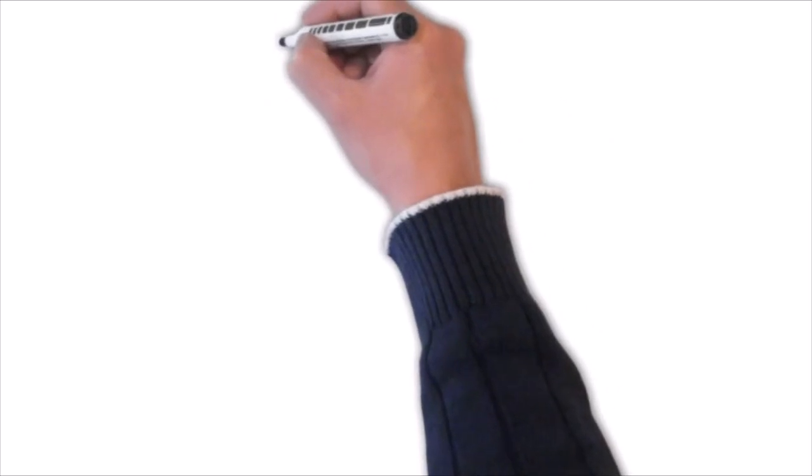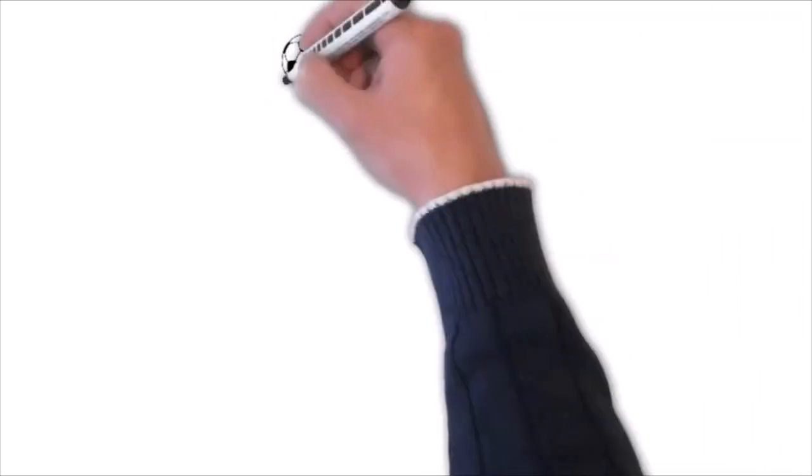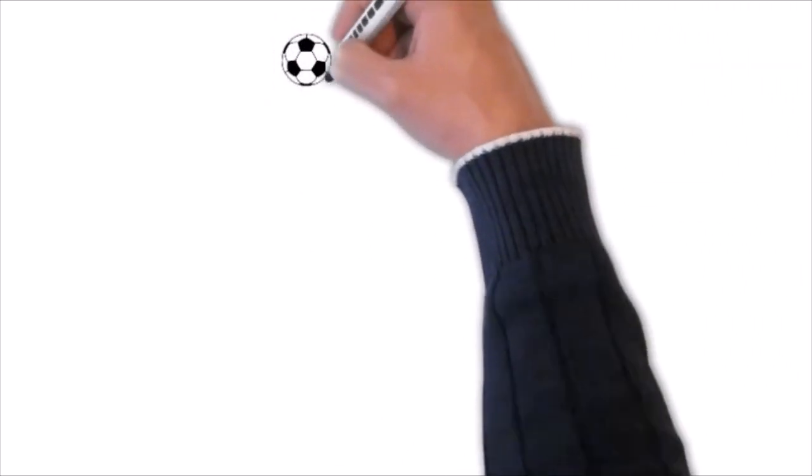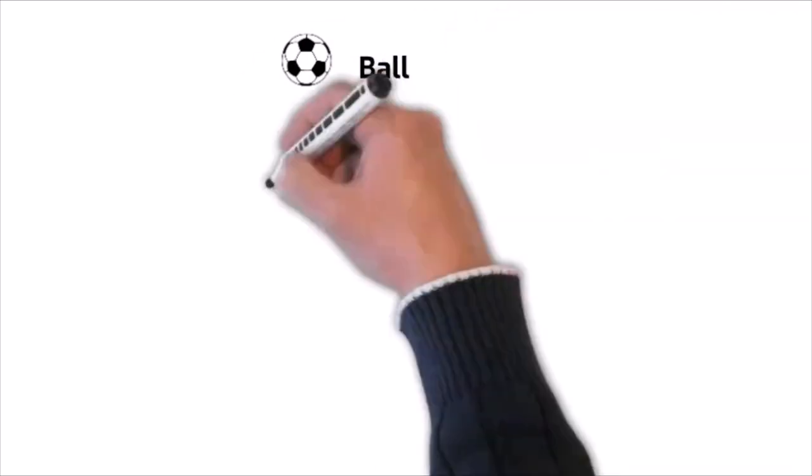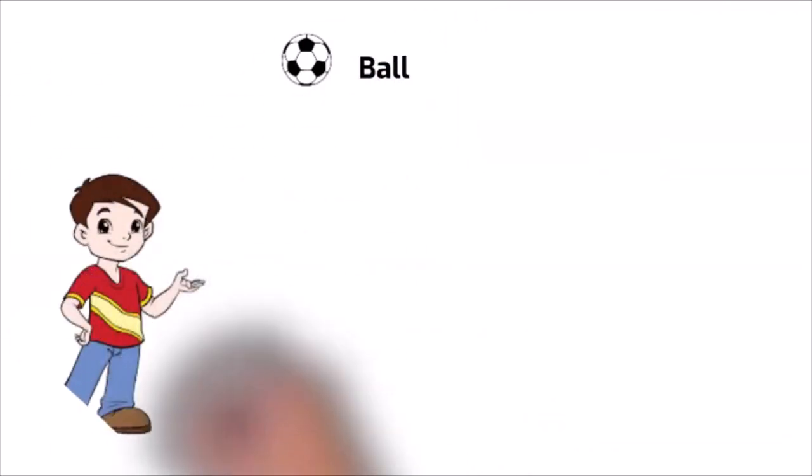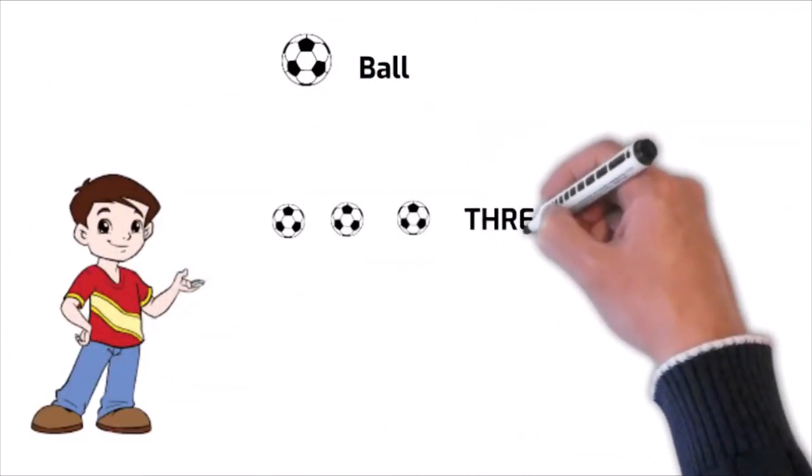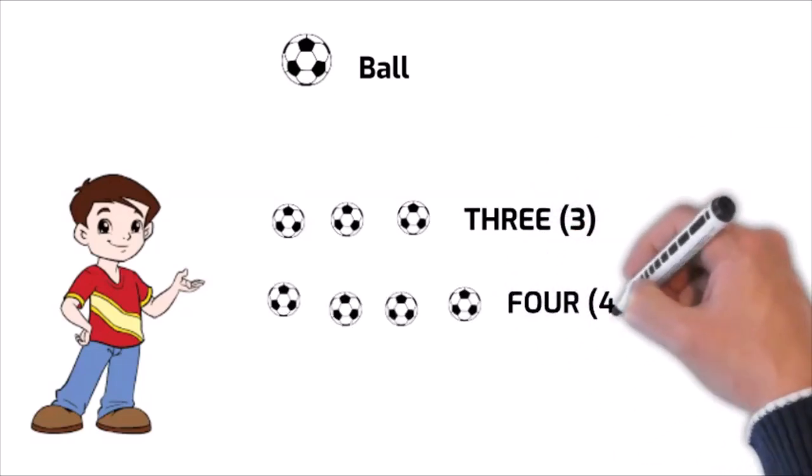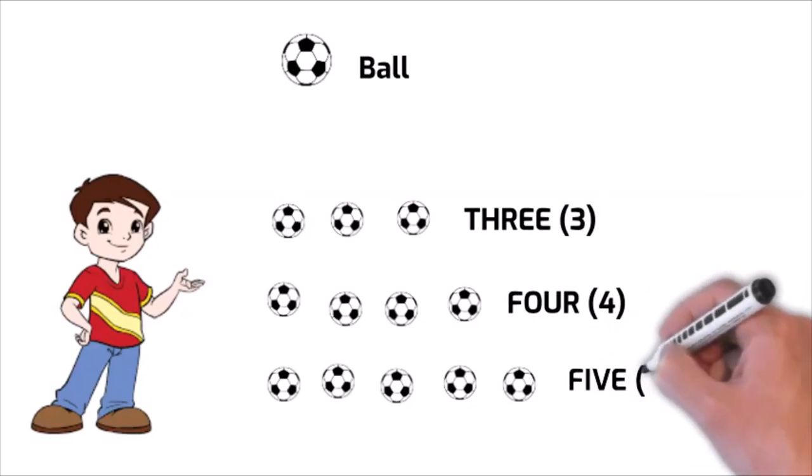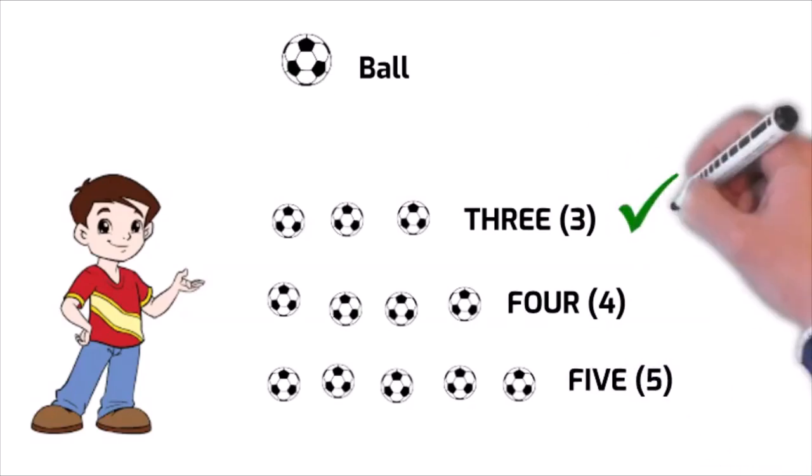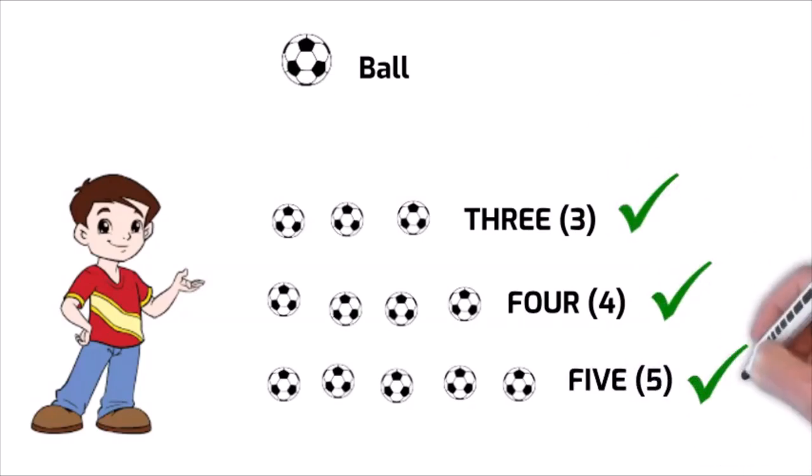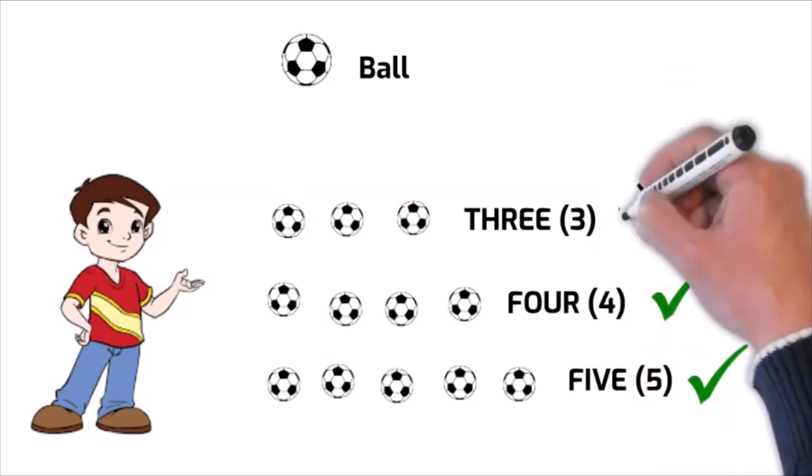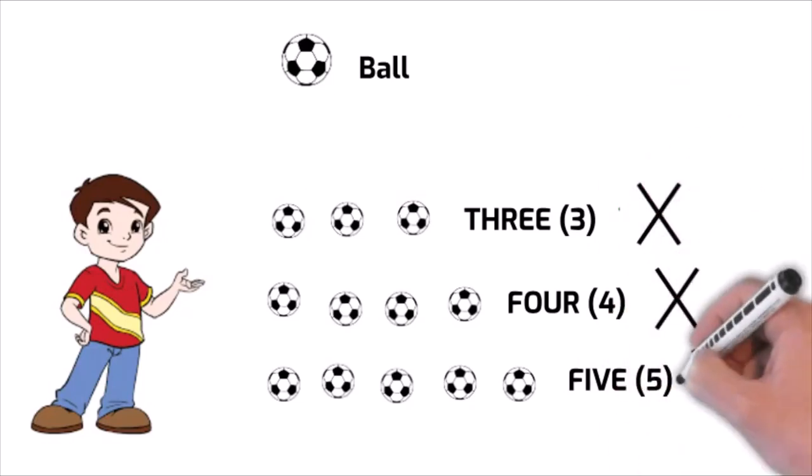And since the object ball is in the plural form, it may be safe to assume that the number of balls John has is three, or maybe four, or possibly five. Any of these numbers could be right, or maybe not.